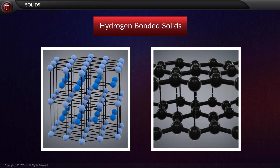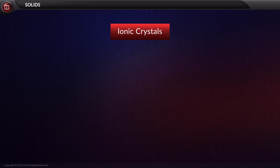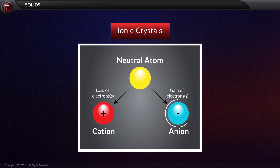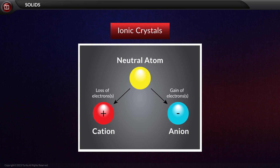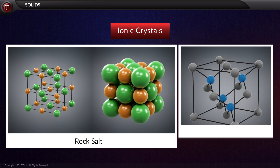Now, let us move on to the next type of crystalline solids, which is ionic crystals. Anions, negatively charged, and cations, positively charged, are the constituent particles of ionic solids. Examples are rock salt, zinc blende, etc.